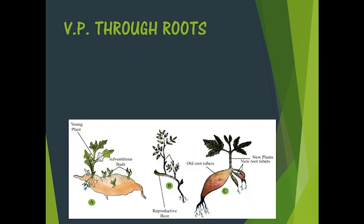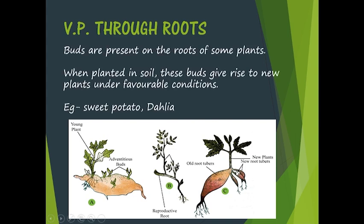The first type is vegetative propagation through roots. The example shown is sweet potato, or shakar gandhi. It has certain depressions, each of which has the capability to regenerate buds, and these buds will eventually form a new plant. When planted in soil, these buds give rise to new plants under favorable conditions — provided with nutrients and water, a new plant will grow. You can even try this at home if you have an interest in plants.